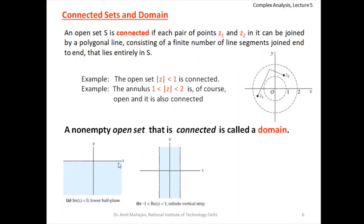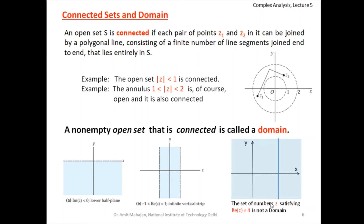Examples of domains: the lower half-plane Im(z) < 0 is a domain — it is open and you can join any two points directly. The infinite vertical strip −1 < Re(z) < 1 is also open and connected. A non-example: the set of z satisfying Re(z) ≠ 4 is not a domain. This excludes the vertical line x = 4, leaving two disconnected half-planes; any path from a point on the left to one on the right must cross that line, so the set is not connected.